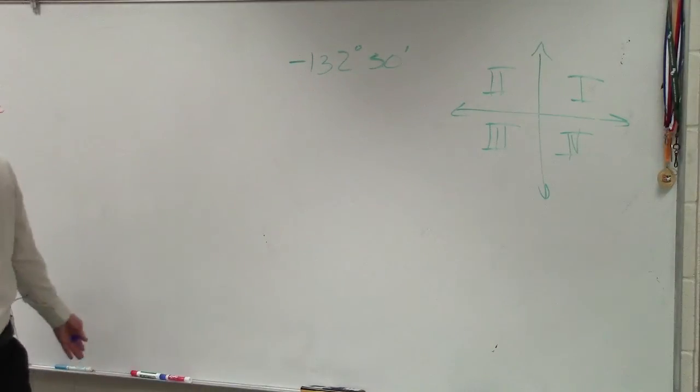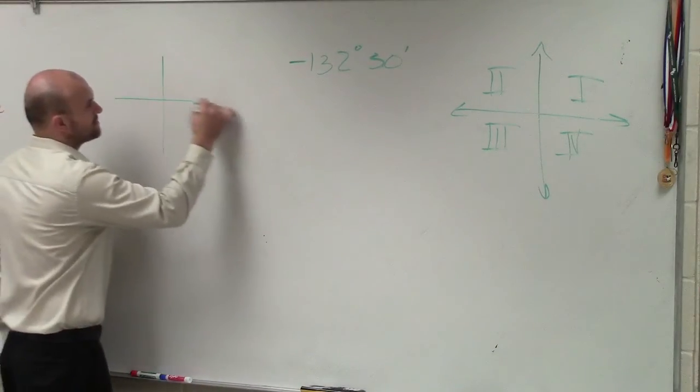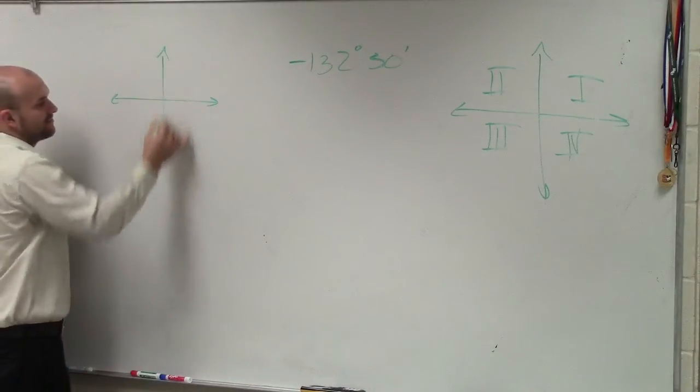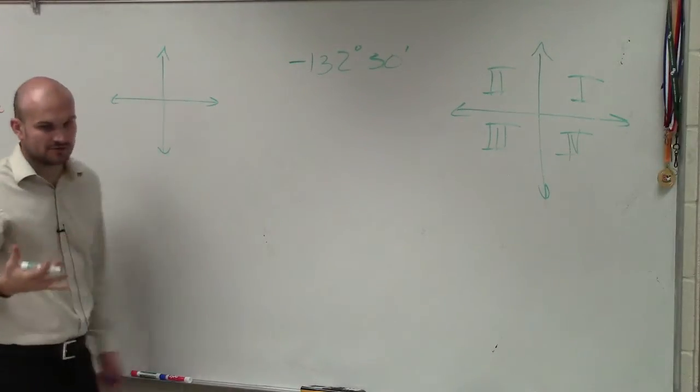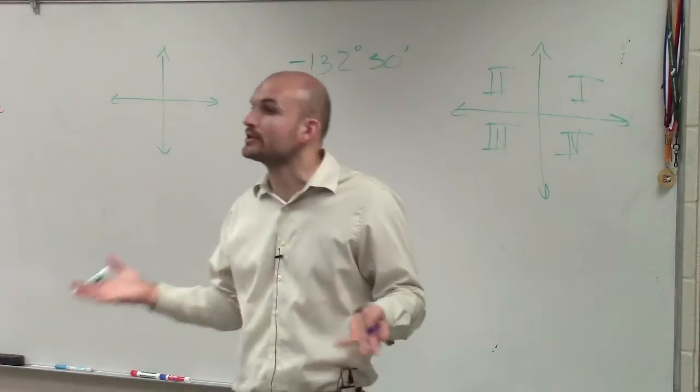So now we just need to determine where is negative 132 degrees. The next thing is you need to determine what's the difference between positive and negative angles. Well, positive angles, remember all angles, we need to have a standardized form of how we're going to write our angles.